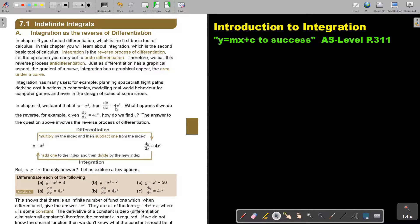In chapter 6 we learned that if you have this function and you differentiate it, you get 4x to the power of 3. What happens if we do the reverse? For example, if we give you the derivative function, how will we find y? The answer to this question involves the reverse process of differentiation.